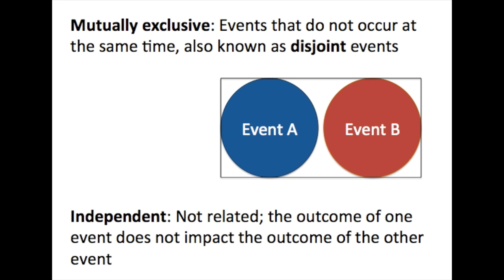Mutually exclusive events are events that do not occur at the same time, also known as disjoint events. The Venn diagram here portrays events A and B as mutually exclusive. You can see that there is no overlap between event A and event B. These are events that never occur at the same time. For example, if you are drawing one card from a standard deck, the event of pulling a diamond and the event of pulling a spade are mutually exclusive. You cannot pull one card that is both a diamond and a spade. Those two events cannot occur at the same time, so they are mutually exclusive.